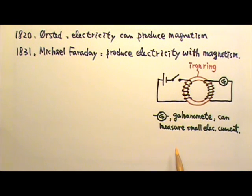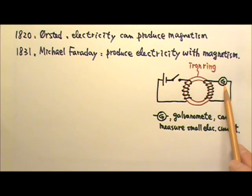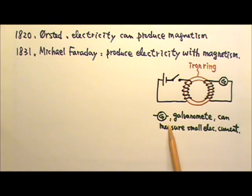In his experiment, Faraday used an iron ring wrapped with two wires. The first wire was connected to a battery with a switch. The second wire was connected to a galvanometer. A galvanometer is like a sensitive ammeter that can be used to measure small electric current.